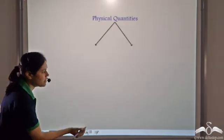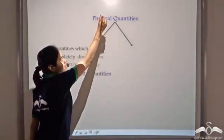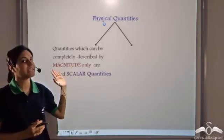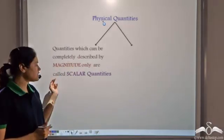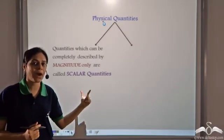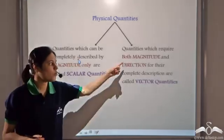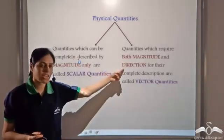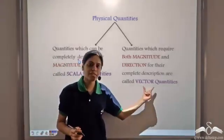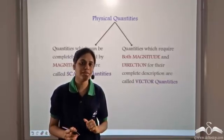We have studied two types of physical quantities. First, quantities which can be completely described by their magnitude only — such quantities are called scalar quantities, as we saw with mass and temperature. Second, quantities which require both magnitude and direction for their complete description are called vector quantities — for example, Jerry's position which we saw earlier.